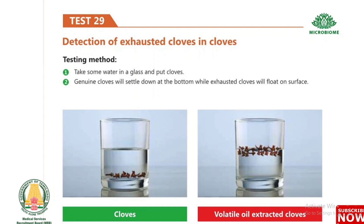Test 29: Detection of exhausted cloves in cloves. Take some water in a glass and put the cloves. Genuine cloves will settle down at the bottom, while exhausted cloves (volatile oil extracted) will float on the surface.